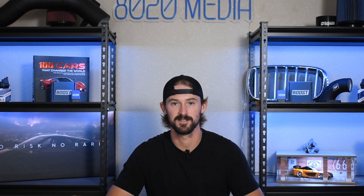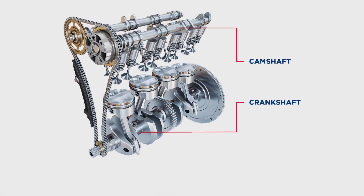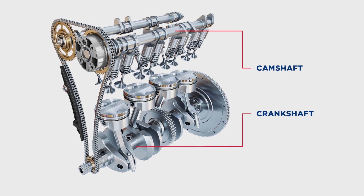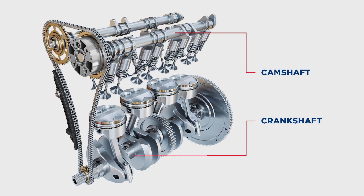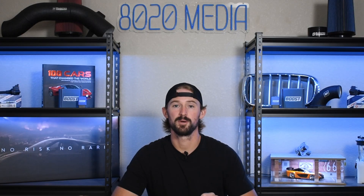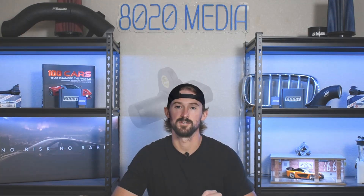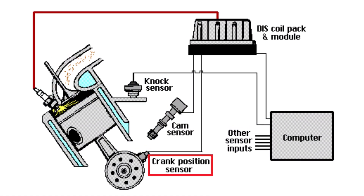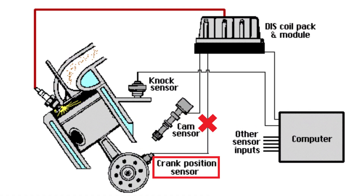While the description for a P0322 fault code is not very easy to decipher upon initial reading, ultimately what it is pointing at is the engine speed input — that is what determines how fast your engine is moving or how many RPMs it is moving at. The short answer is what this is referring to is your crankshaft position sensor. It essentially means that your engine's computer or ECM is not receiving any signal from the crankshaft position sensor.